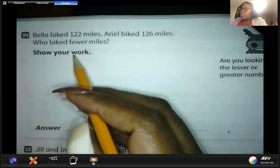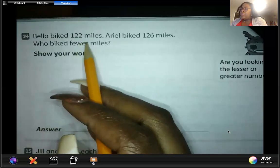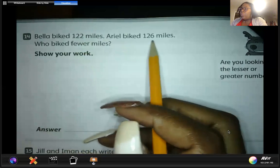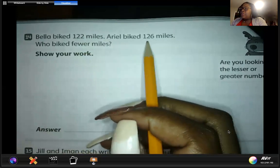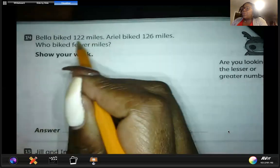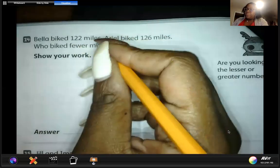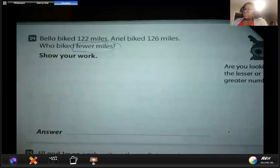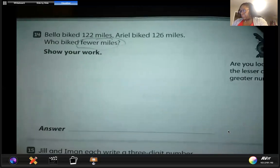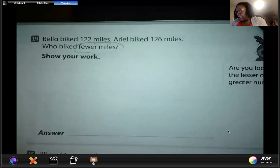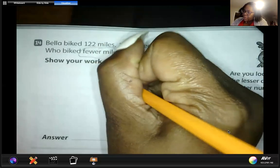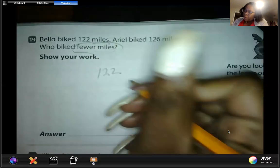Bella biked 122 miles. Aria biked 126 miles. Who biked the fewer miles? Let's show our work.